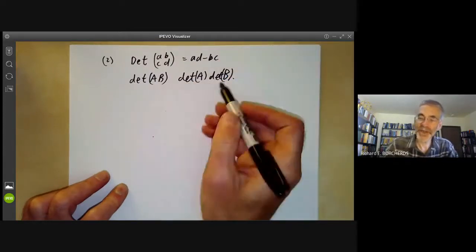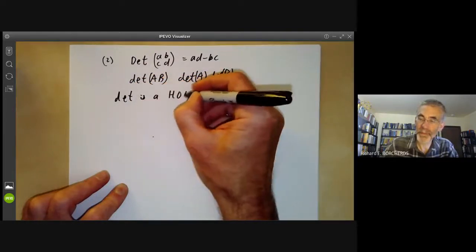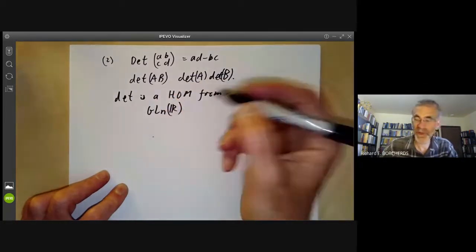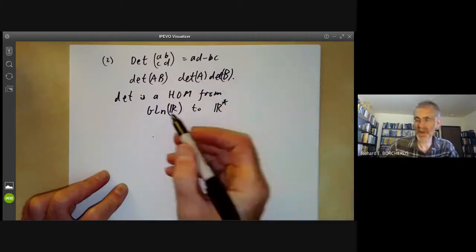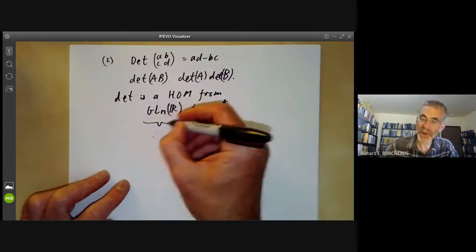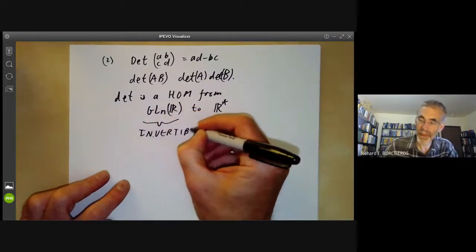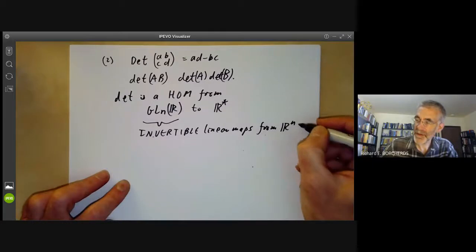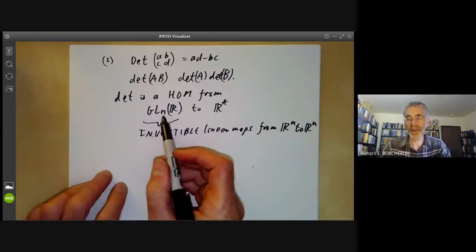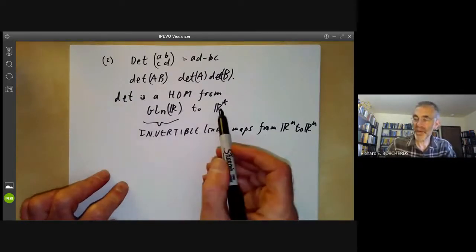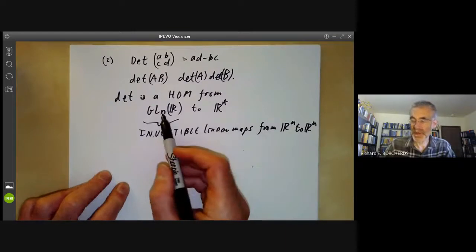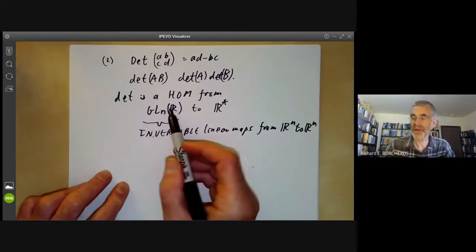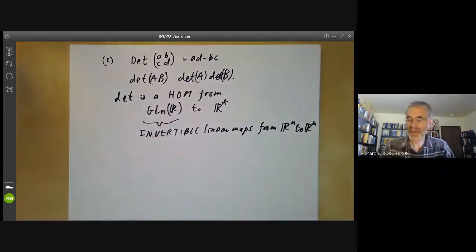This means the determinant map is a homomorphism from the general linear group GL_n over the real numbers — the group of invertible linear maps from ℝⁿ to ℝⁿ — to the non-zero real numbers. The real numbers can be replaced by any field. There's a homomorphism from this group onto the non-zero real numbers, at least if n is greater than or equal to 1. If n is 0 then this is a trivial group and the map isn't onto.